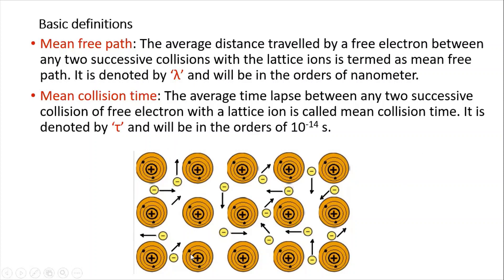Looking at this figure, the free electrons randomly move within the metal, moving in all possible directions. A free electron will collide with the positively charged lattice ion core, take a diversion, and move in another direction. The average distance traveled by the free electrons between any two successive collisions is called the mean free path, and it will be in terms of nanometers.